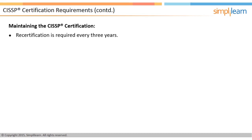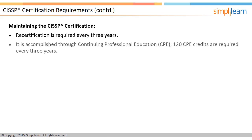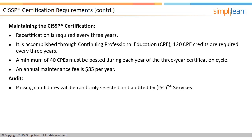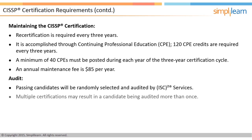Recertification is required every three years, primarily accomplished through continuing professional education, or CPE. 120 CPE credits are required every three years, with a minimum of 40 CPEs posted during each year of the three-year certification cycle. CISSPs must also pay an annual maintenance fee of $85 per year. Passing candidates may be randomly selected and audited by ISC² Services prior to issuance of any certificate.